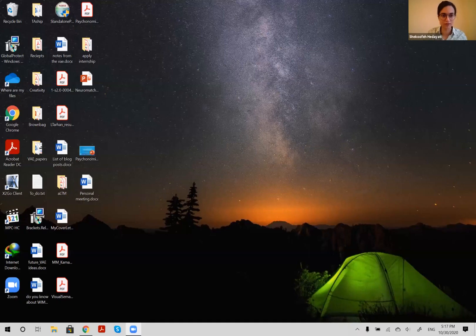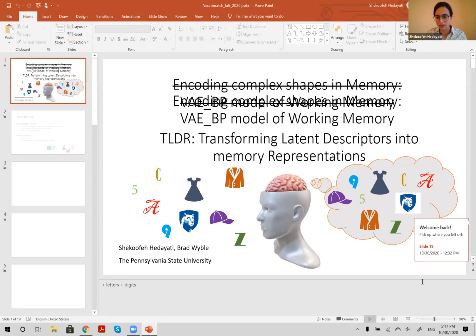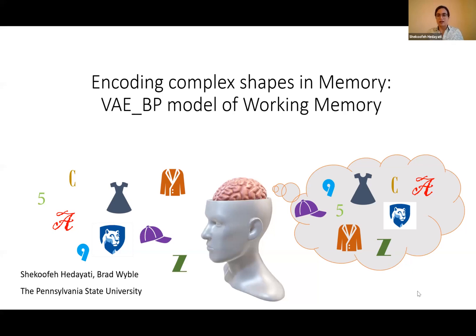Thank you so much. I'm really glad to be here. Let me share my screen. Hello everyone again. My name is Sheku. I'm going to talk about a project that we've been working on for about a year. Its title is Encoding Complex Shapes in Memory, the VAE-BP Model of Working Memory. However, as we've been working on this, we came up with a new title.